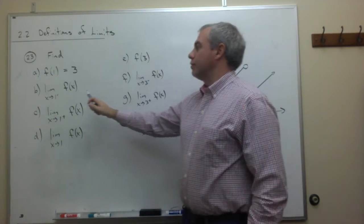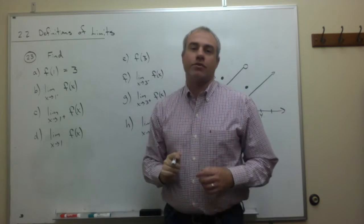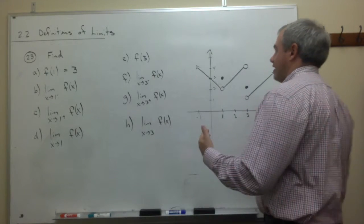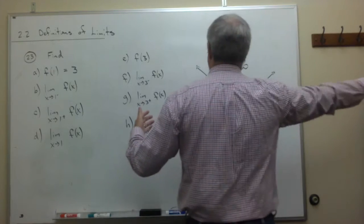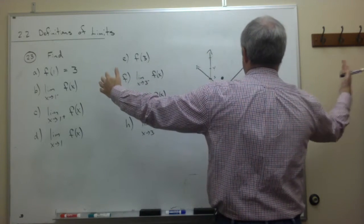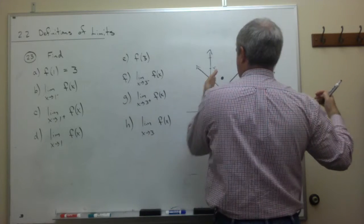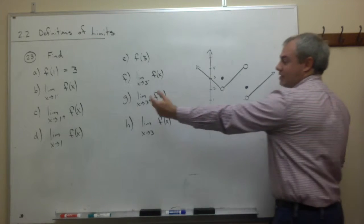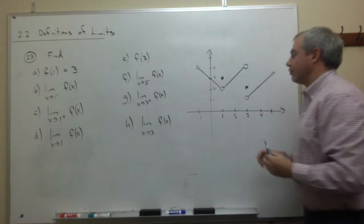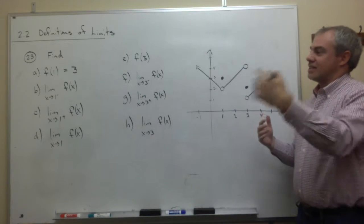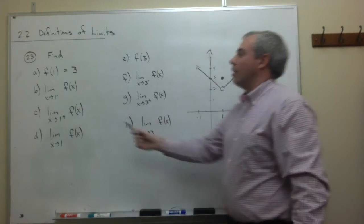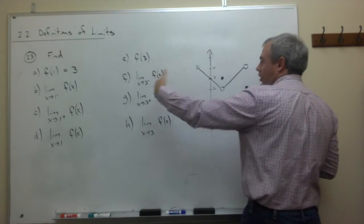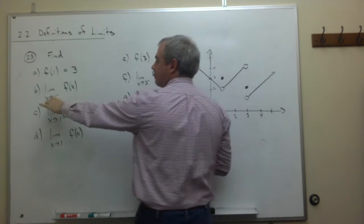Now we get into two pieces of this problem that have to do with left-hand limits and right-hand limits. If I'm facing the board, my right hand is over here and my left hand is over here. The right side of a number line is positive, the left side is negative. So I'll use that knowledge to understand what the little minus and plus superscripts mean — for example, the limit as x goes to 1 from the left.